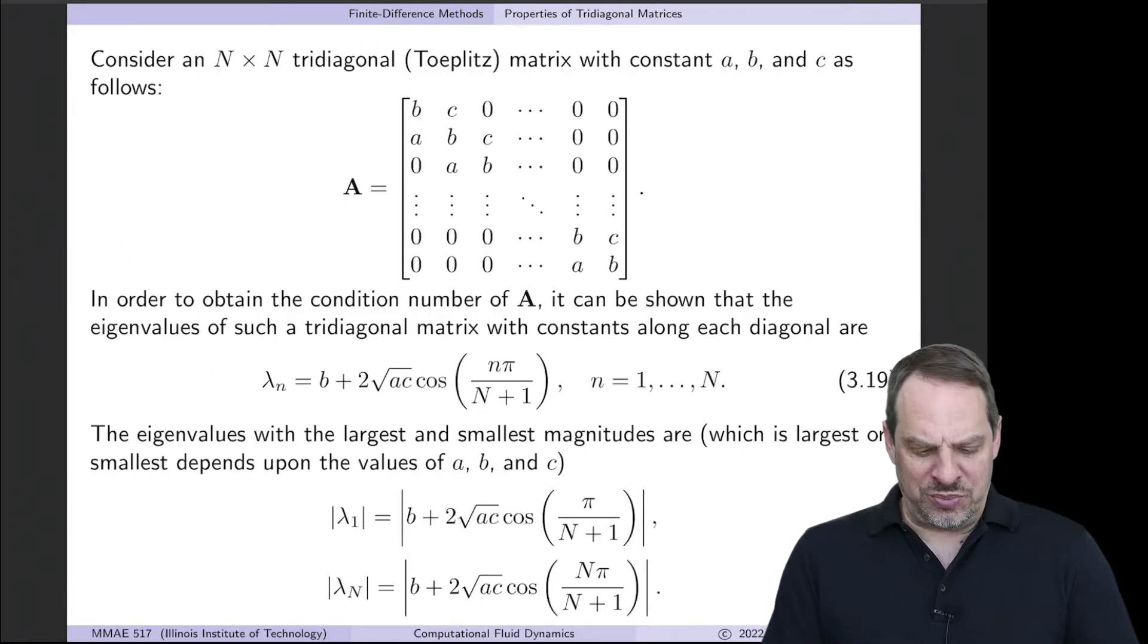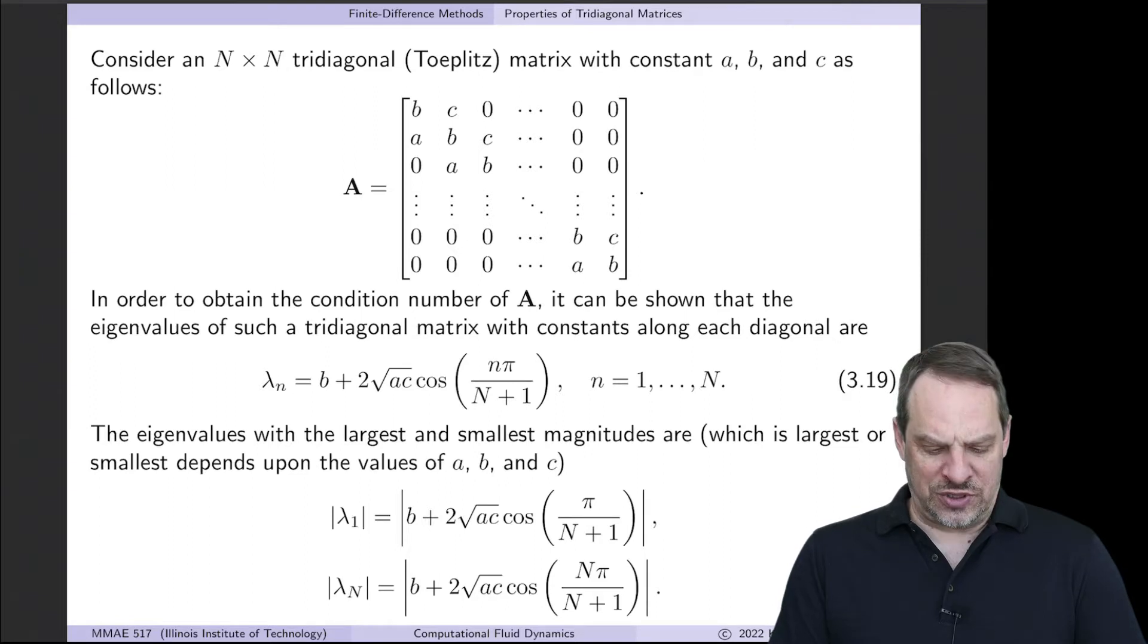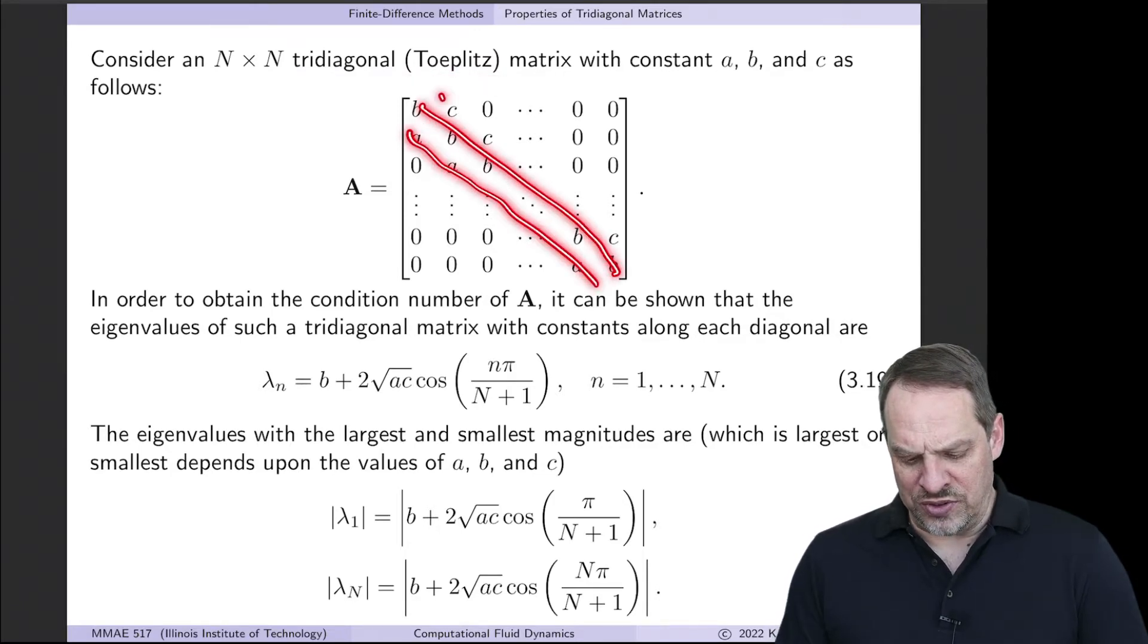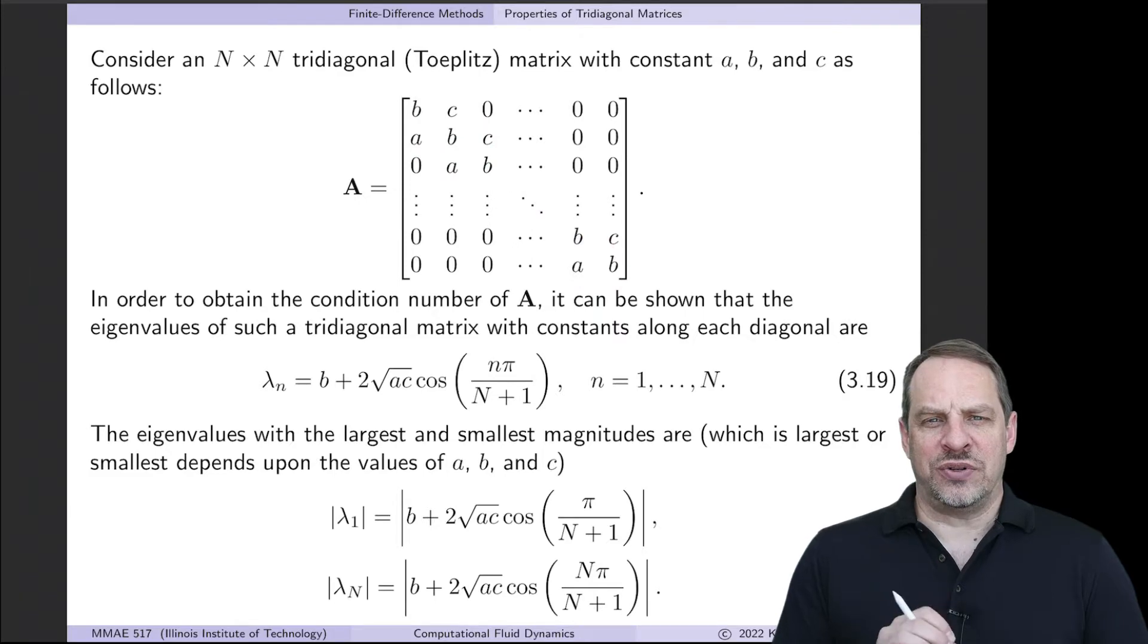So let's consider a simplification of the general tridiagonal system that we had last time. Let's say it's N by N, and it's a Toeplitz matrix. A Toeplitz matrix is such that the diagonal elements are all the same. So in other words, in this case, the a's are all the same, the b's are all the same, and the c's are all the same.